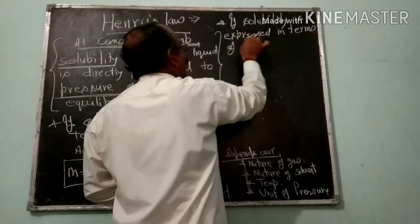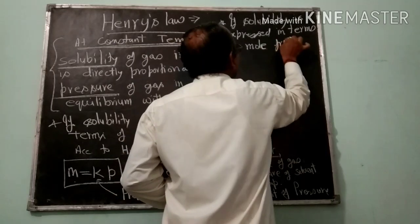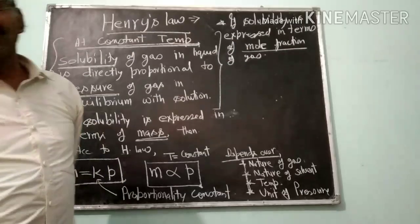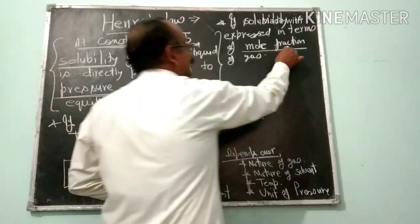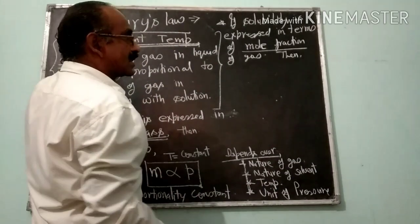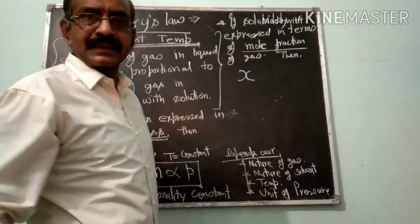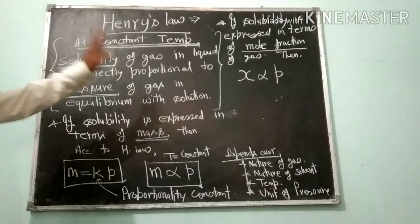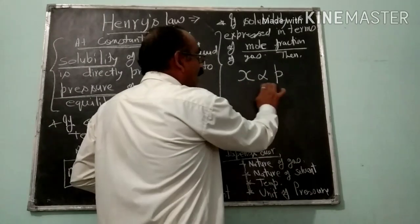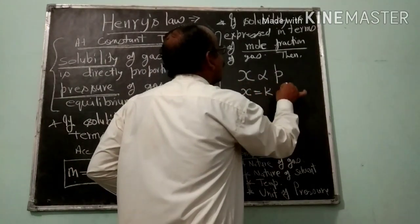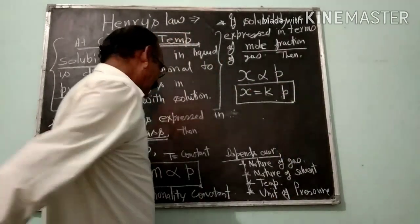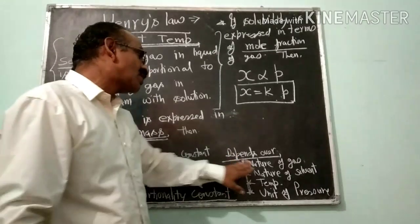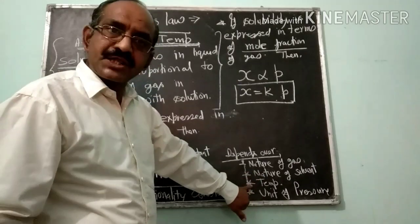If solubility is expressed in terms of mole fraction, then according to Henry's Law, the mole fraction of dissolved gas will be proportional to its pressure in equilibrium with the solution. If you remove the proportionality sign you get a constant K. This proportionality constant K depends on the nature of gas, nature of solvent, temperature, and units of pressure.